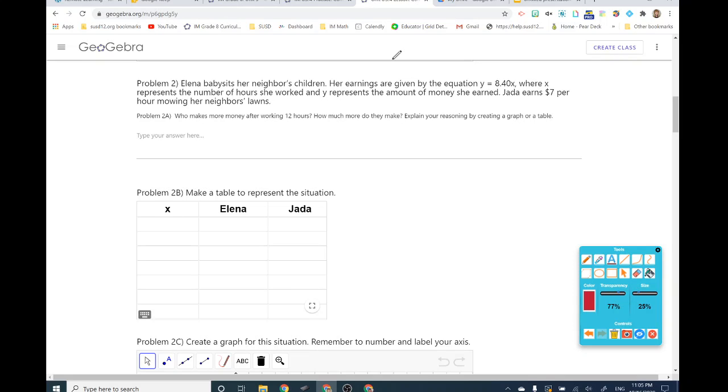Elena babysits her neighbor's children. Her earnings are given by the equation Y equals 8.40X, where X represents the number of hours she worked, and Y represents the amount of money she earned. Jada earns $7 per hour mowing her neighbor's lawn.